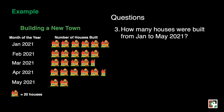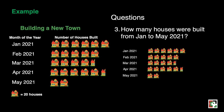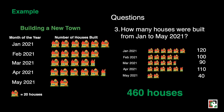For question three, how many houses were built from January to May 2021? January: 6 times 20 equals 120. February: 5 times 20 equals 100. March: 4.5 times 20 equals 90. April: 5.5 times 20 equals 110. May: 2 times 20 equals 40. Adding 120 plus 100 plus 90 plus 110 plus 40 gives us 460 houses. That is our final answer.